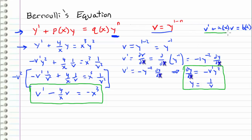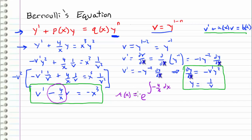This is the linear differential equation we're going to solve — it's of the form v prime plus a(x)·v equals b(x). We can't separate variables here, so we'll use an integrating factor. As derived previously, μ(x) = e to the integral of the coefficient in front of v, which is negative 4/x dx. Evaluating: μ(x) = e to the negative 4 ln(x). Moving the negative 4 as an exponent and canceling e and ln gives μ(x) = x to the negative fourth power.